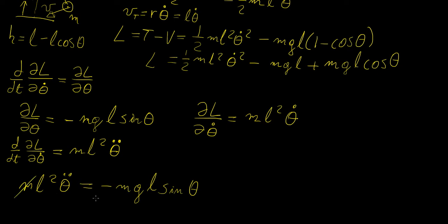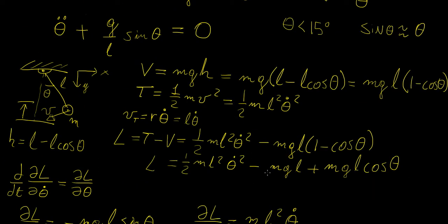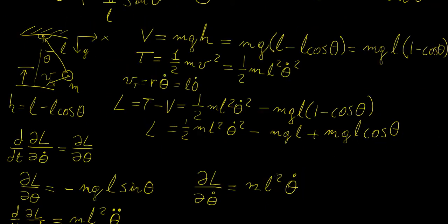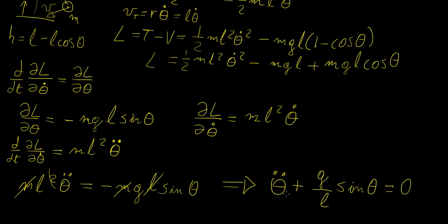So once again the M cancels out, one of these L's goes out with that, and then what we can do is we can rearrange this to get the following equation: theta double dot plus g over L times sine theta equals to zero. So you notice here that we got exactly the same equation and yeah it did take a little bit more work but you notice that we arrived at the same result simply based on the energy.